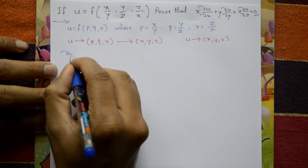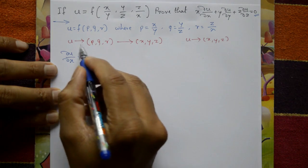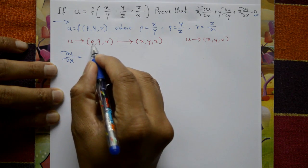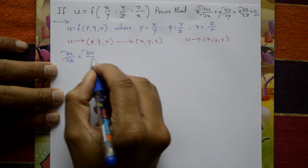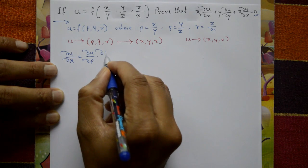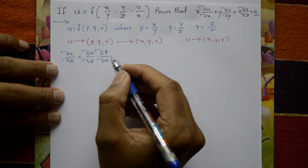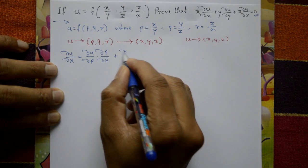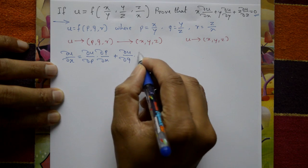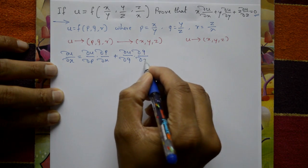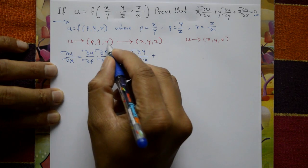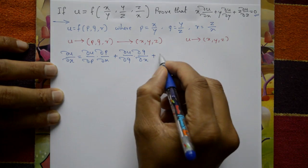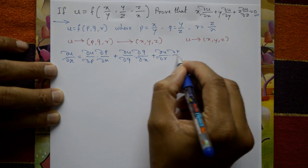Now, ∂u/∂x equals ∂u/∂p · ∂p/∂x plus ∂u/∂q · ∂q/∂x plus ∂u/∂r · ∂r/∂x.